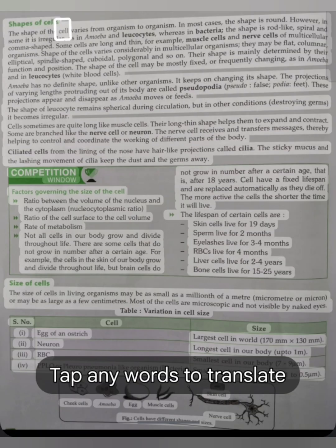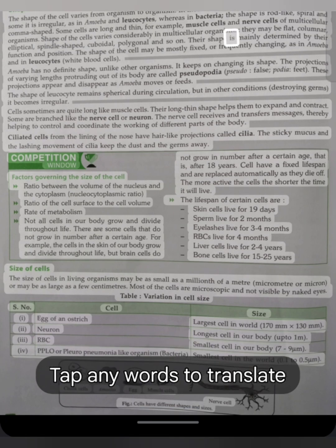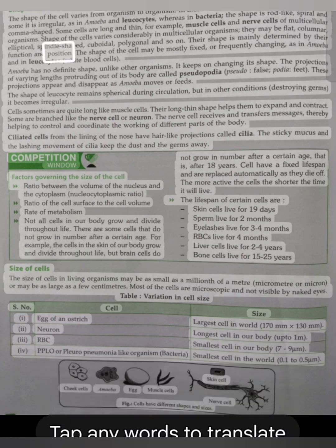Shapes of cells. The shape of the cell varies from organism to organism. In most cases, the shape is round. However, in some it is irregular, as in amoeba and leukocytes, whereas in bacteria, the shape is rod-like, spiral and comma-shaped. Some cells are long and thin. For example, muscle cells and nerve cells of multicellular organisms. Shape of the cells varies considerably in multicellular organisms. They may be flat, columnar, elliptical, spindle-shaped, cuboidal, polygonal and so on. Their shape is mainly determined by their function and position.